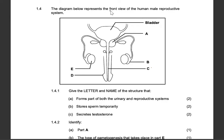The diagram represents the front view of the human male reproductive system, so they are telling us what the diagram is about. Just to be safe, learn both the front and the side view of the reproductive systems — for both the male and the female.